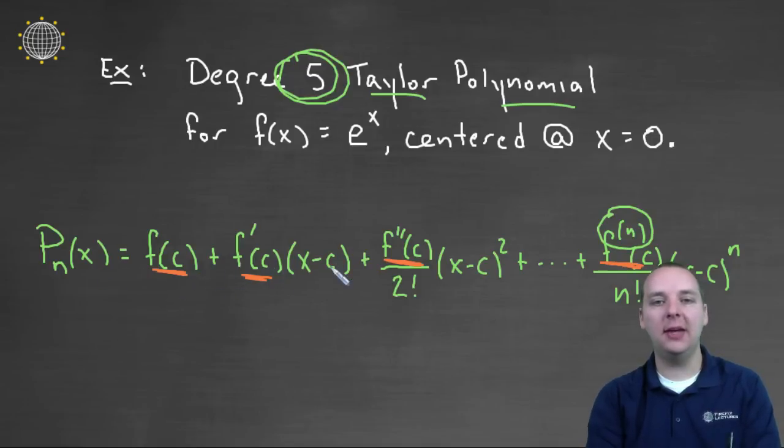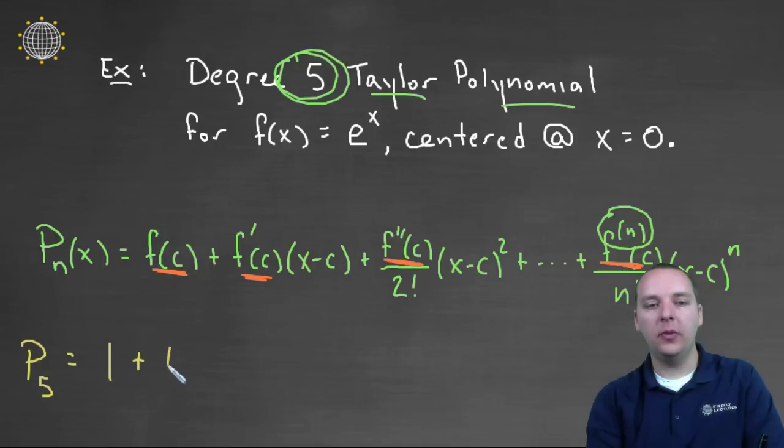Alright so basically we're going to take this guy and just fill in the numbers that we just found. So here we go. So we want a polynomial of degree five and this will be e to the zero which is one, e prime or the derivative of e to the x which is e to the x evaluated at zero which is one, times x minus c but ours is centered at zero. So x minus zero.